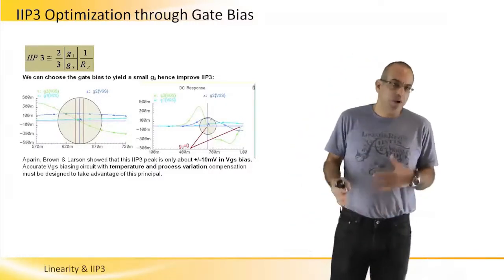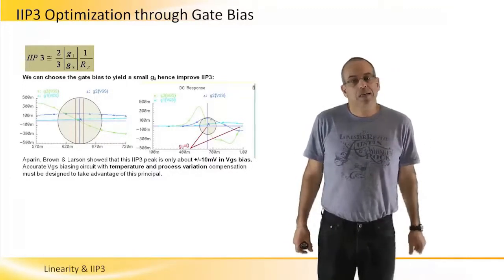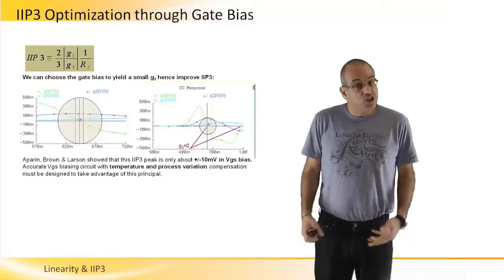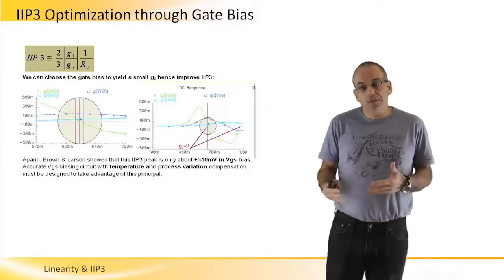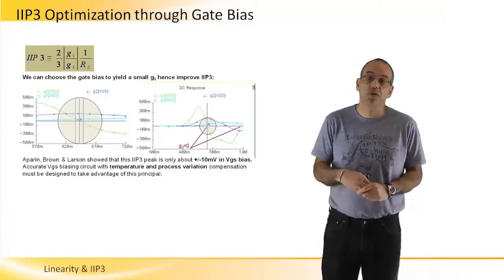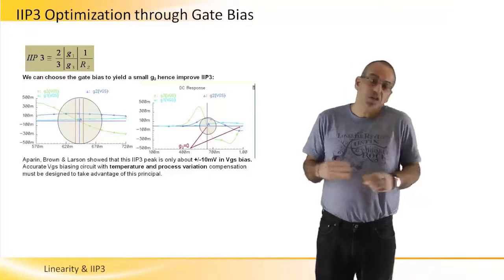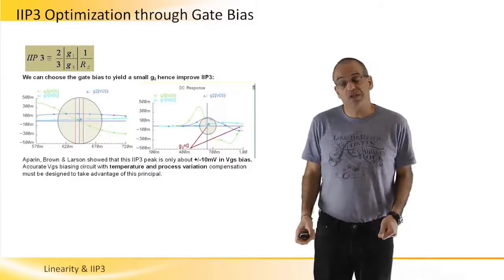And so it really requires very complicated compensation circuits to do that, which they did. And they show that they can really improve in lower frequencies around 2 gigahertz and lower.